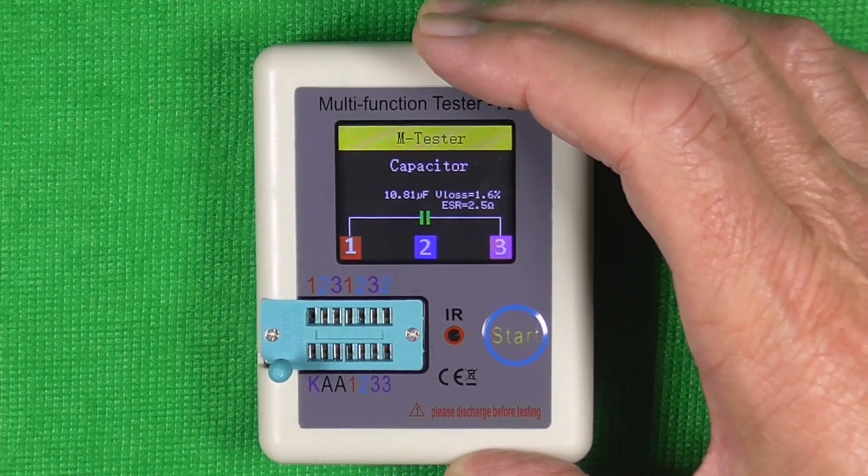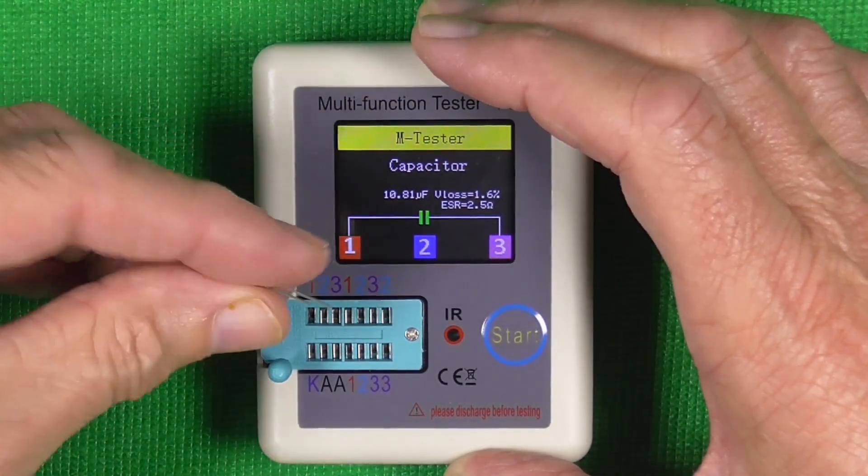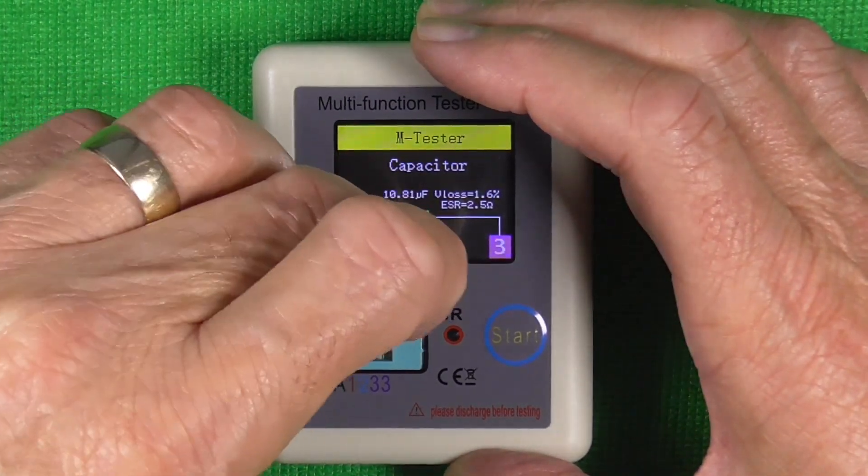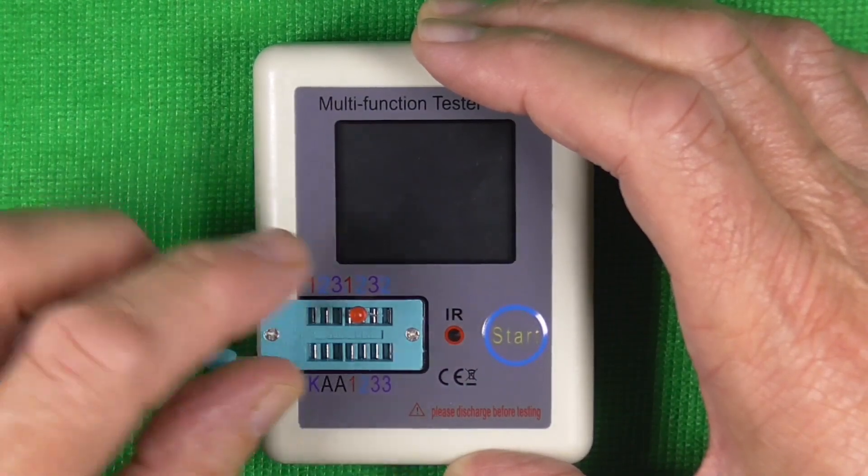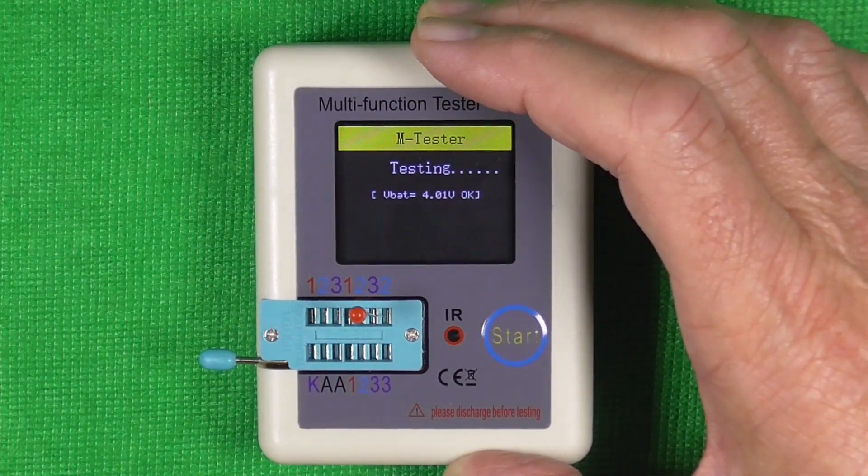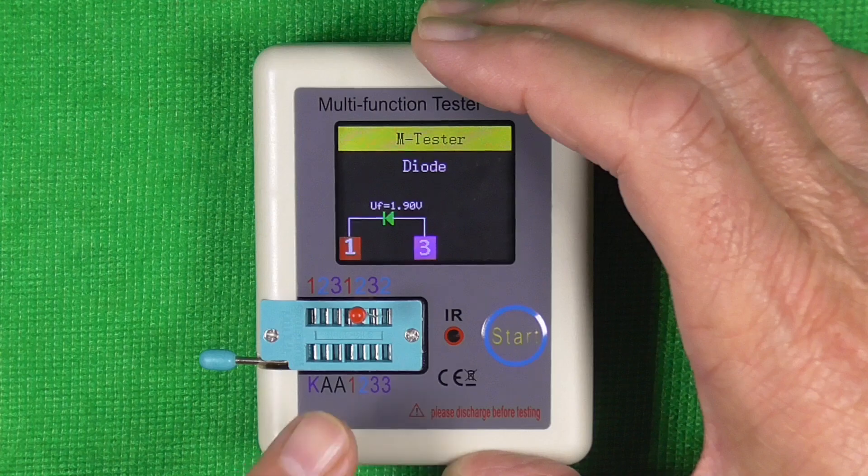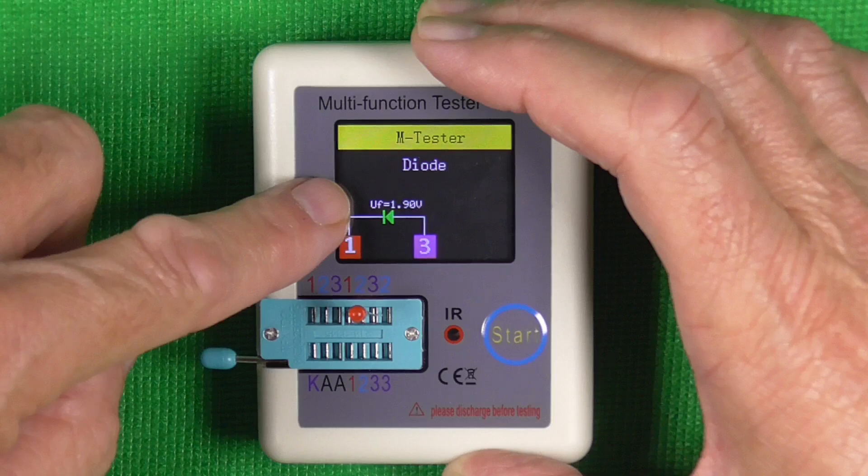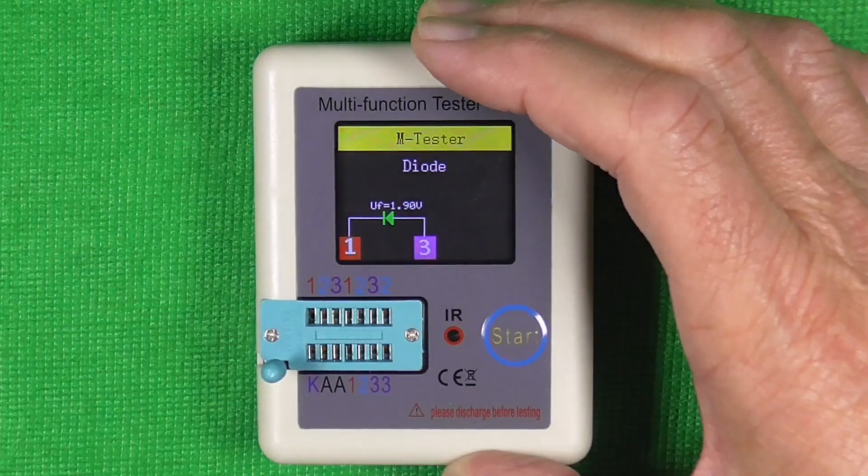So now we'll test this little LED that came with it. Again, just pop it in, a leg in each test point. Move the lever over to clamp it, press start. And you'll notice it flashed a few times. Been identified as a diode, shows you the polarity, and UF equals 1.90. So that's them.